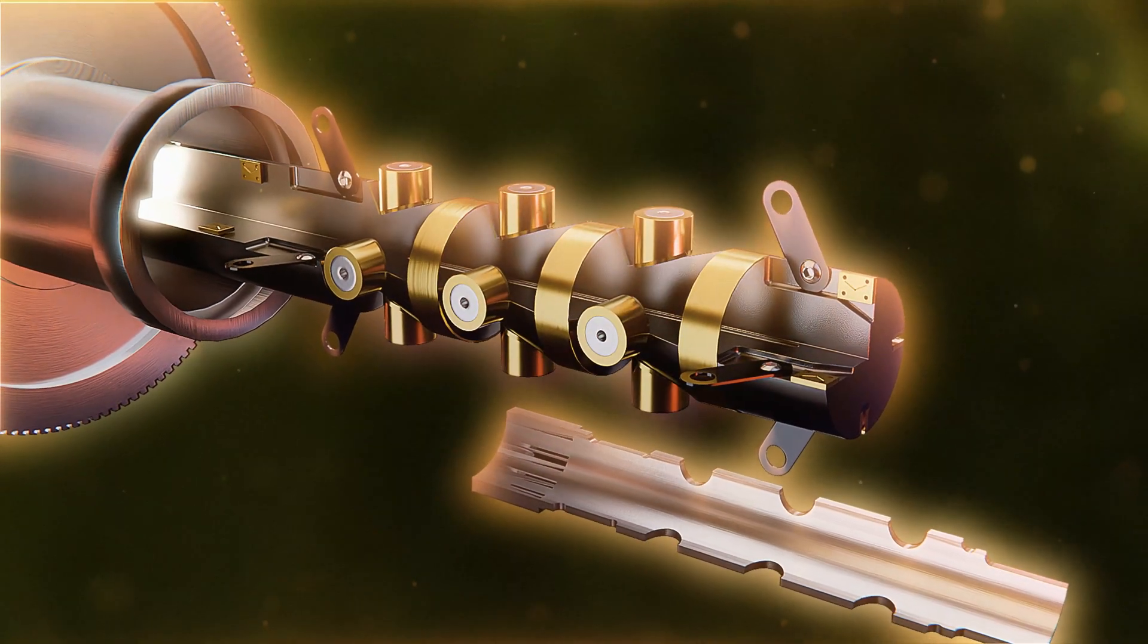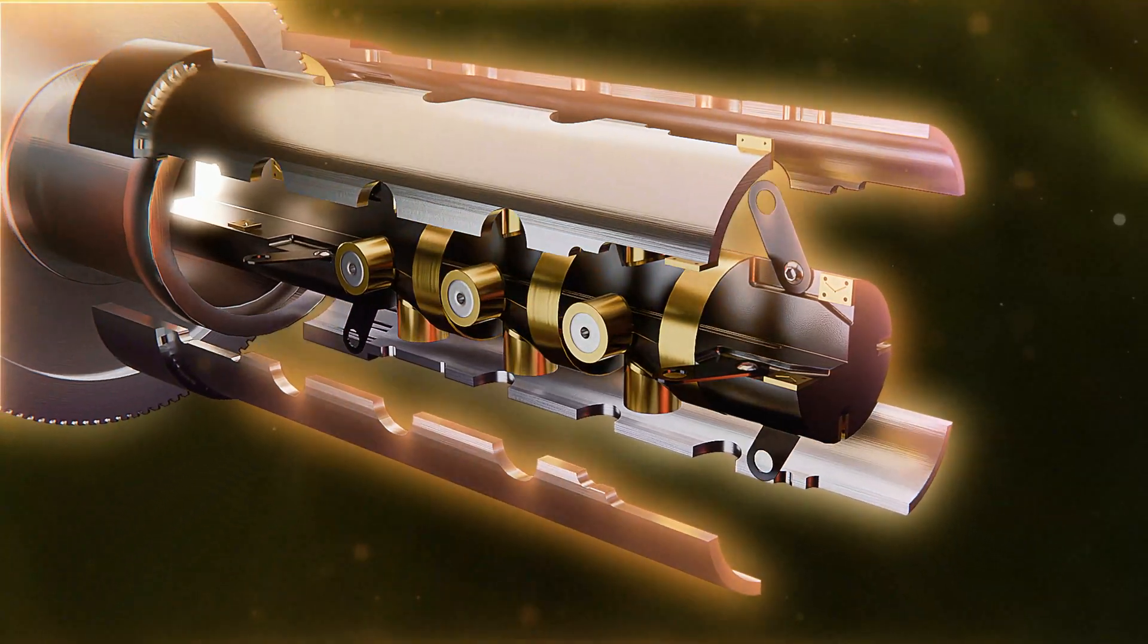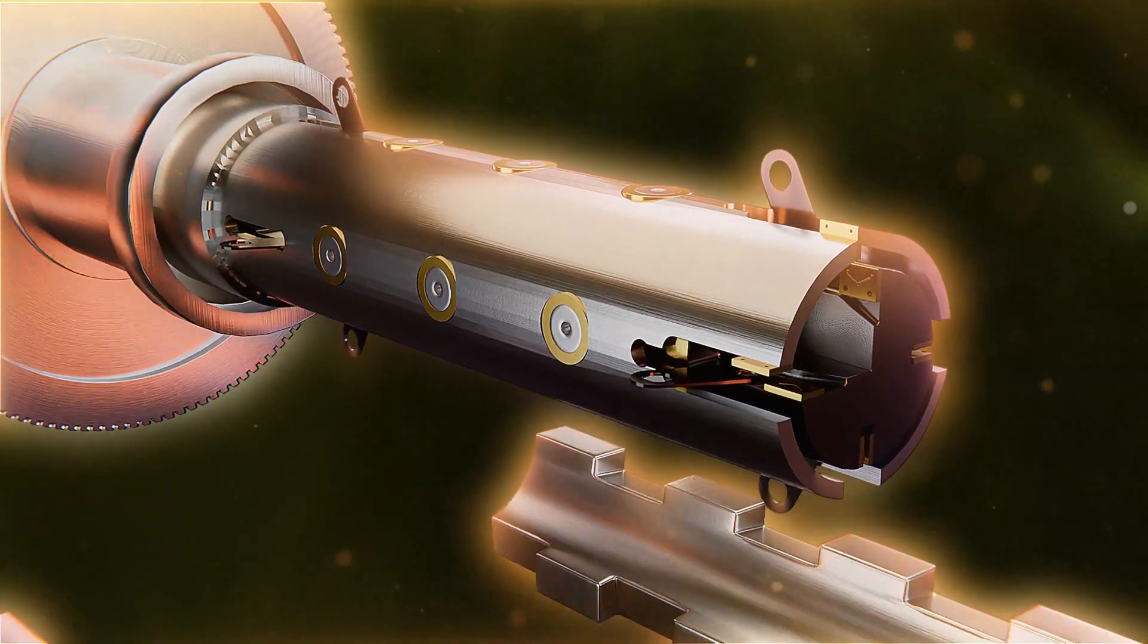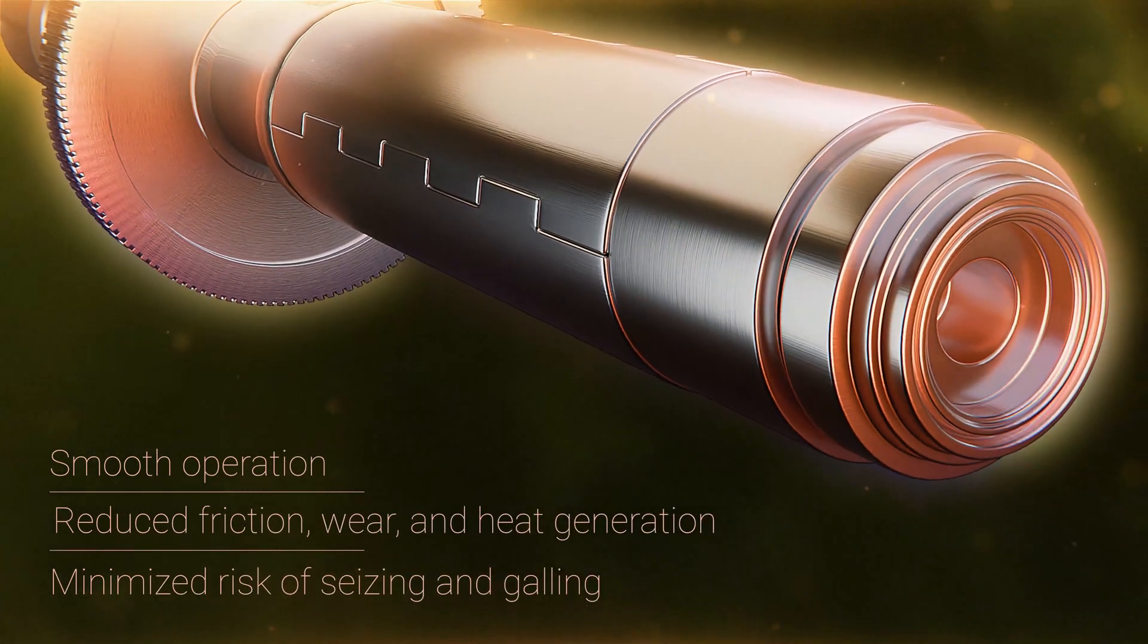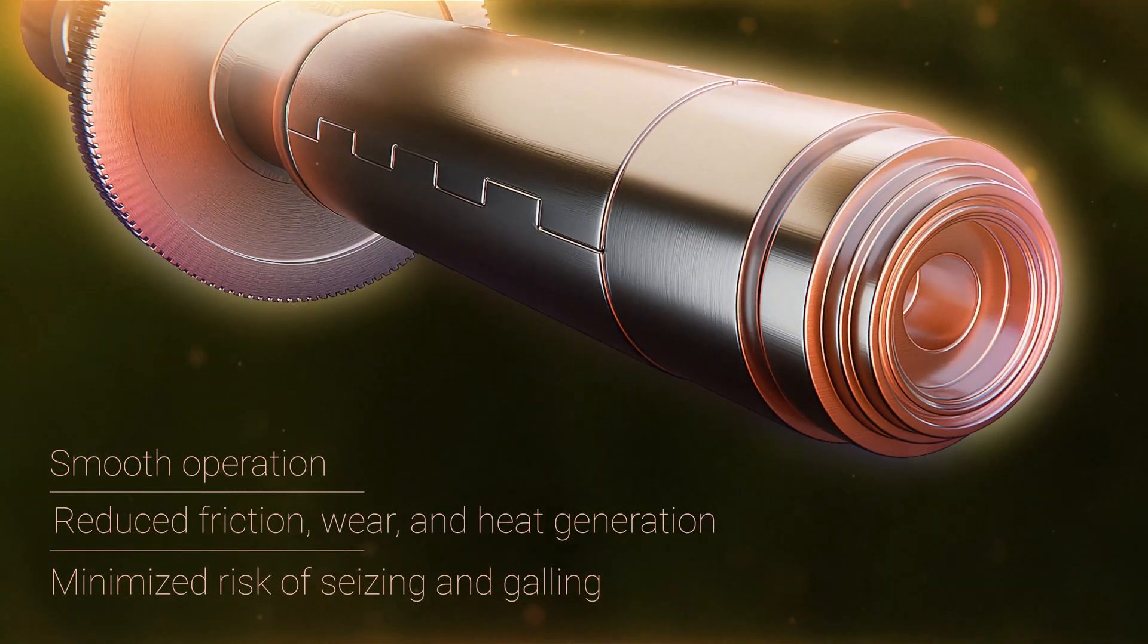In summary, the parts made from Amco material ensure the efficient operation of the down-coiler mandrel by enabling smooth rotation, reducing wear on critical components, and extending the service life of the equipment.